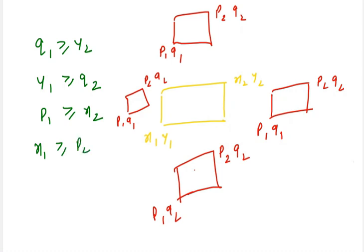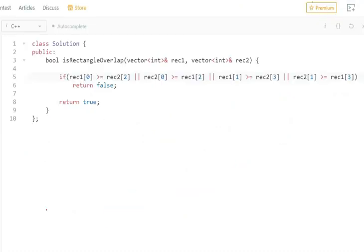So these are the four conditions that we need to check for non-overlapping. If any of these conditions satisfies, then it means that the rectangles don't overlap and we will return false. Otherwise, it is guaranteed that the rectangles will overlap and we will return true. Now to code this is pretty simple. We just need to write those four conditions, and if any of these conditions will work we will return false, otherwise we will return true.